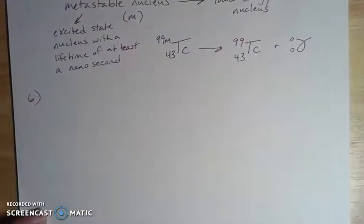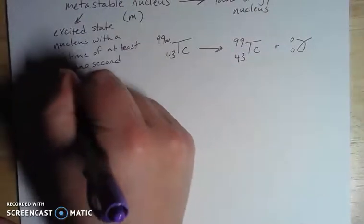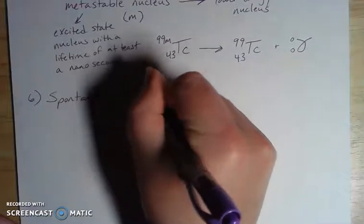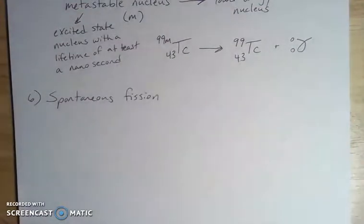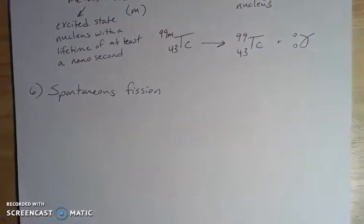Let's talk about our sixth type of spontaneous decay, which is spontaneous fission. I'll talk in later videos about fission that happens through nuclear bombardment. That's a slightly separate thing because that's a non-spontaneous process that is caused by something else.